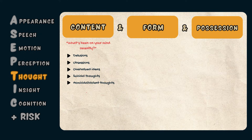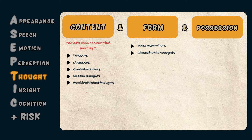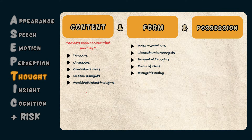Thought form refers to how a patient moves from one thought to another — in healthy individuals, this should be logical and at a steady pace. Abnormalities include loose associations, where a patient moves rapidly from one topic to another with no apparent connection. Circumstantial thoughts include lots of unnecessary or irrelevant detail but eventually come back to the main point. Tangential thoughts involve digressions from the main subject. Flight of ideas refers to fast, pressured speech where ideas run into one another making it difficult for the observer to follow. Thought blocking is a sudden cessation of thought, typically mid-sentence.